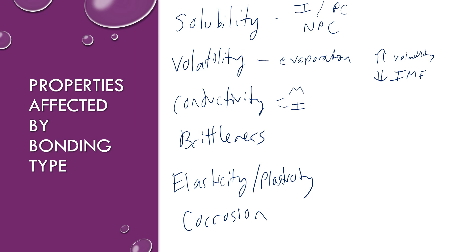Elasticity and plasticity: elastic things, when you pull or stretch them under force, will snap back into their original shape when you release that force. Whereas with plasticity, when you mold and shape a material, it's going to retain that new form. Some metals tend to have more plasticity, where you can bend them into different shapes and they will keep that bent shape. Corrosion has to do with how much a compound will oxidize at any given point. All of these properties are affected by the amount of ionic bonding versus metallic bonding versus covalent bonding.